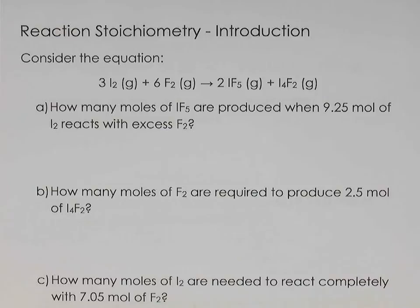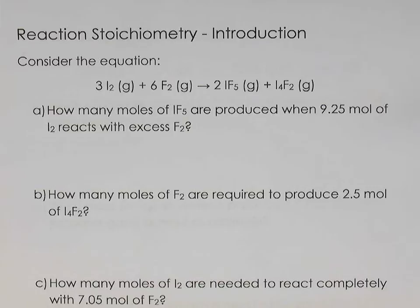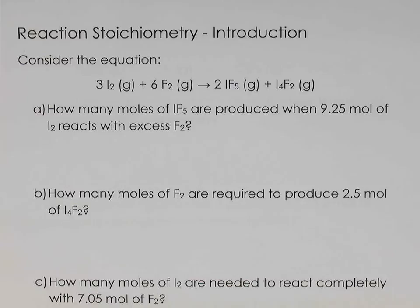Now we're going to take a look at how to apply stoichiometry to chemical reactions and balanced chemical equations. Remember that stoichiometry involves finding or using ratios — whether from the subscripts in a formula, or as we'll see here, the ratios from the coefficients in the balanced equation. The approach is similar; we're going to use unit multipliers. So let's jump in.